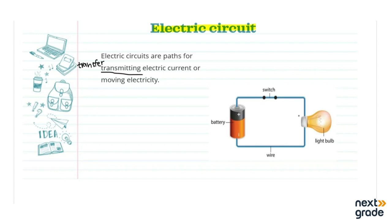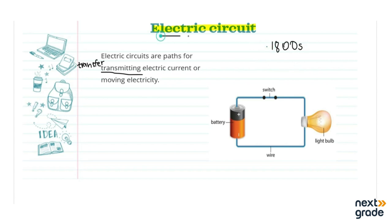Scientists have studied electricity for hundreds of years, but it was not until the 1800s that they learned how to create a continuous flow of electricity and then to channel it through the use of circuits. So the 1800s mark the start of practical electricity. But at that time, they did not yet know how to fully use and control it. Eventually, scientists created the electric circuit.